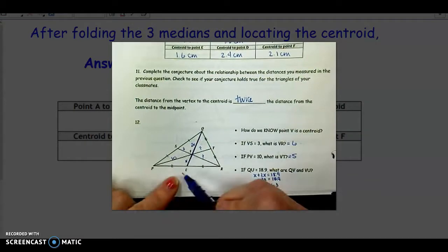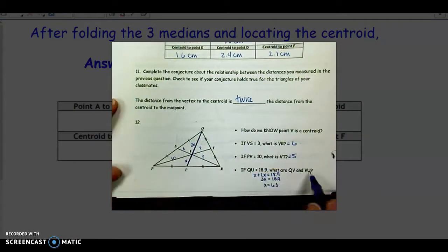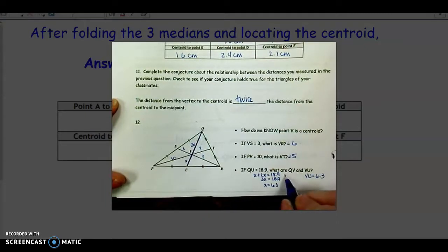And dividing both sides by 3 gives me X to be 6.3. So X is the shorter part, the VU. So VU is 6.3. QV is the longer part, that's double this amount. So 6.3 times 2 would give me 12.6.